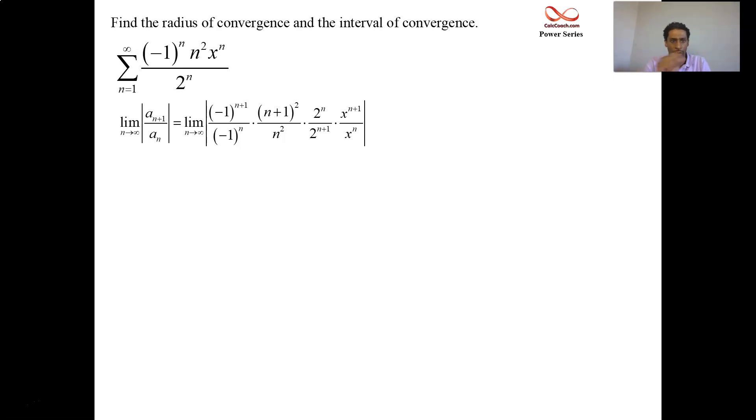And then in the gaps, what we do is we put in the original terms, a sub n. So negative 1 to the n underneath negative 1 to the n plus 1, n squared underneath n plus 1 quantity squared, and so on. So we get to this point, and now we do some algebra, break apart these exponents, make them negative 1 to the n times negative 1, 2 to the n times 2, x to the n times x, break them apart, and then we could do some canceling. The negative 1 to the n's cancel, the 2 to the n's cancel, the x to the n's cancel.